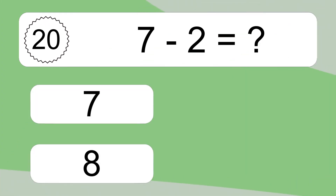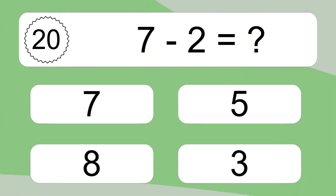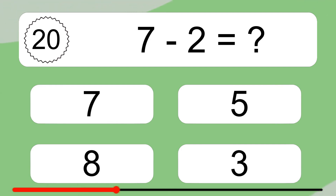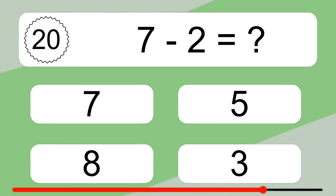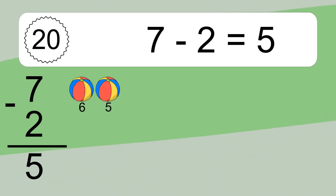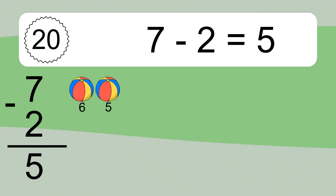7 minus 2 equals what? 7 minus 2 equals 5. Let's count it: 6, 5.